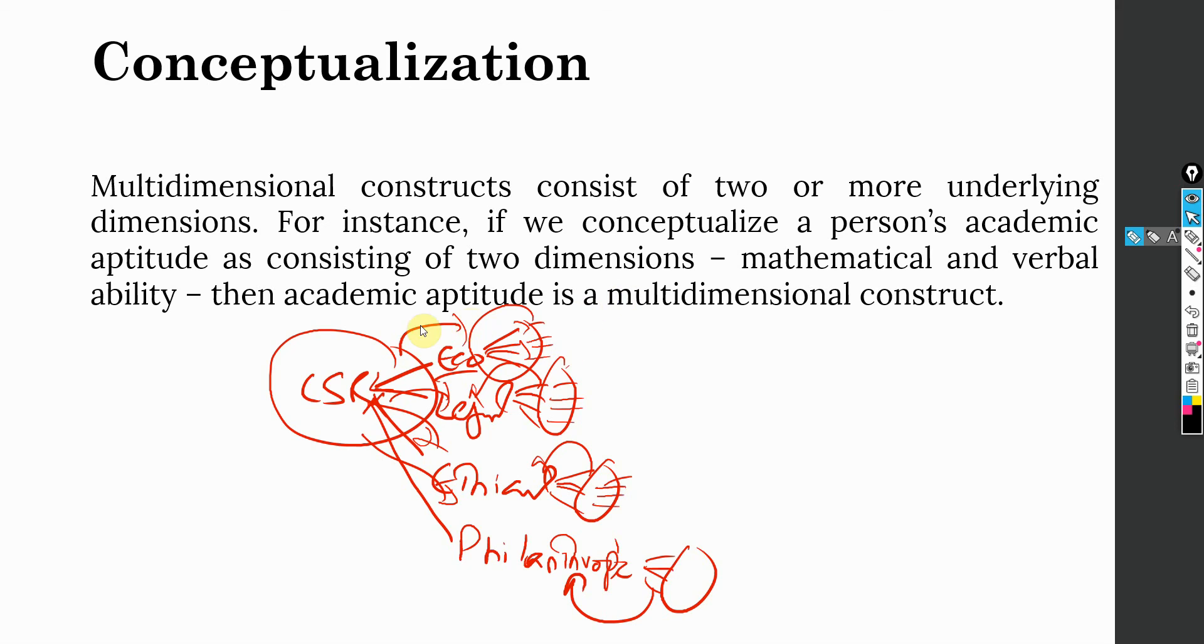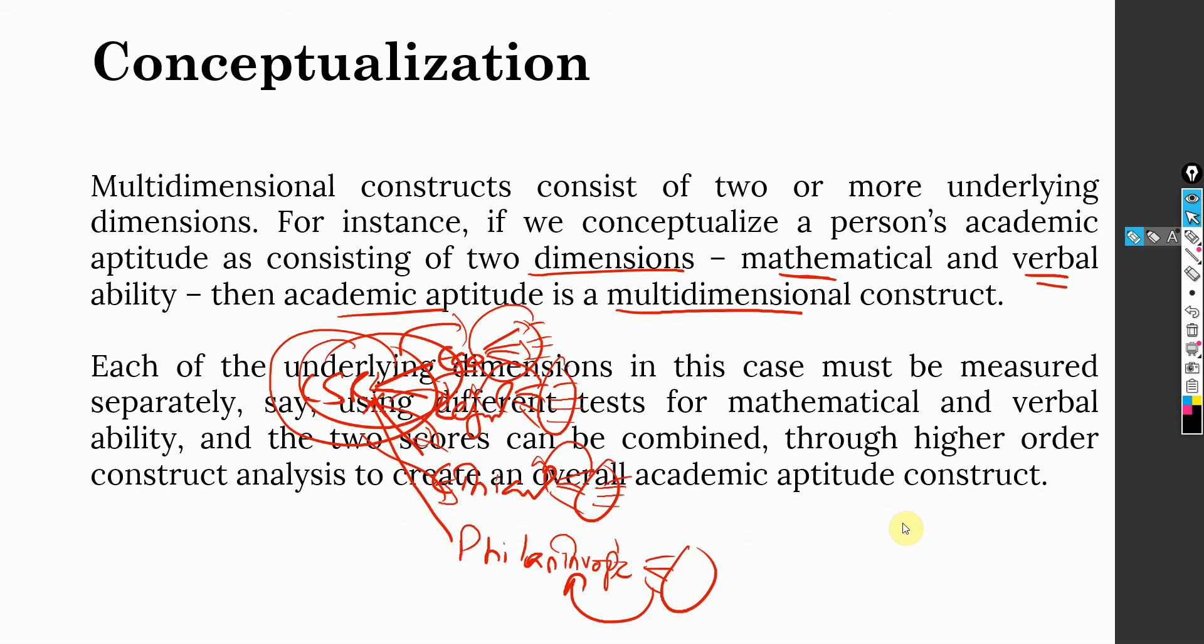For example, if you conceptualize a person's academic aptitude as consisting of two dimensions—mathematical and verbal ability—then academic aptitude is a multidimensional construct because it consists of two dimensions, mathematical and verbal, just as we did with CSR. Each of these constructs must be measured separately. Mathematical measured separately, verbal measured separately, and then we can combine them.